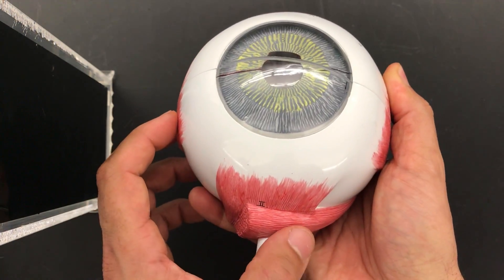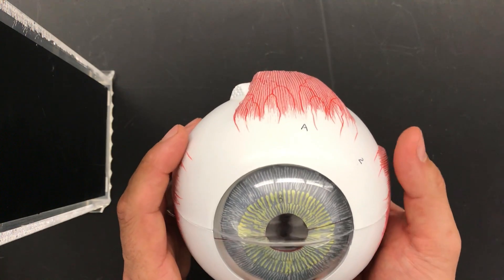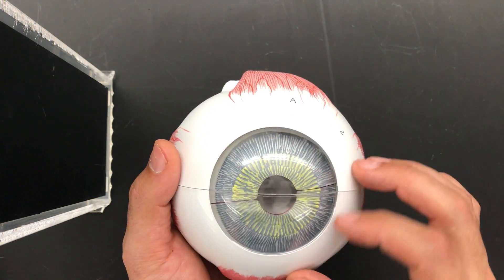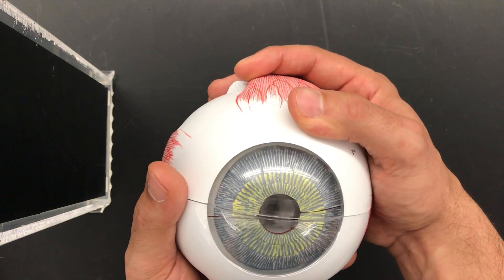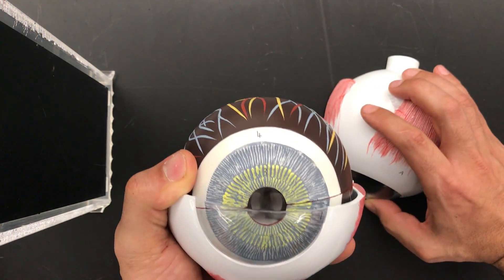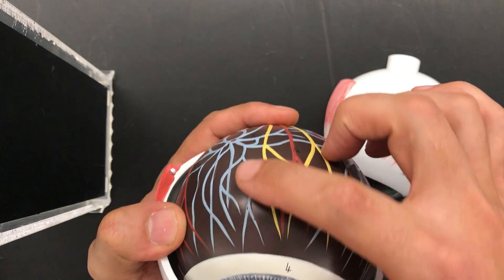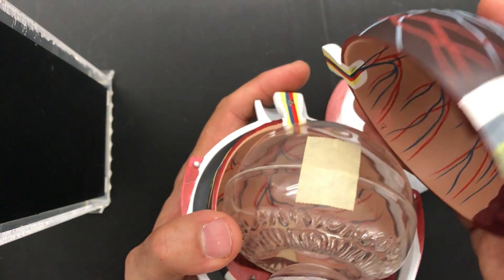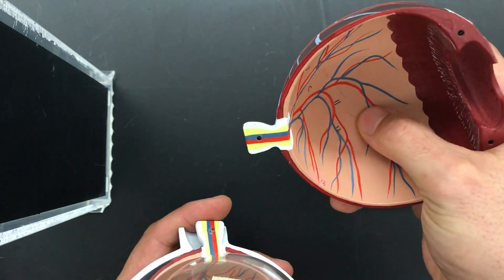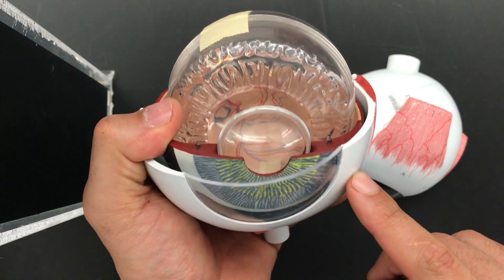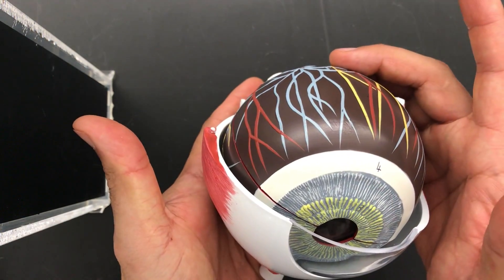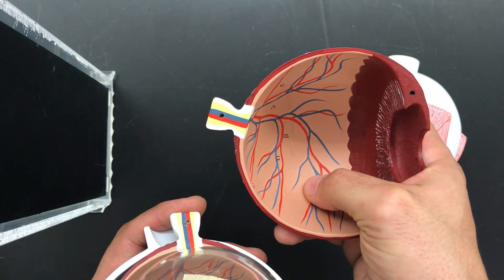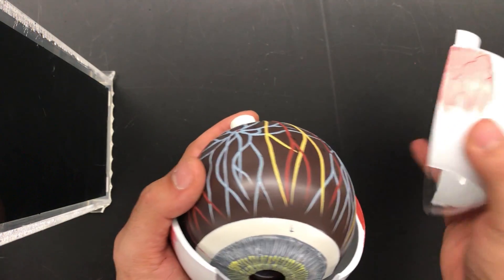There are three layers to the eye. This outside white layer here is the sclera. If we remove that, this brown here is the choroid, and on the inside this is the retina. So again, the white is the sclera, this brown is the choroid, and the third layer is the retina.